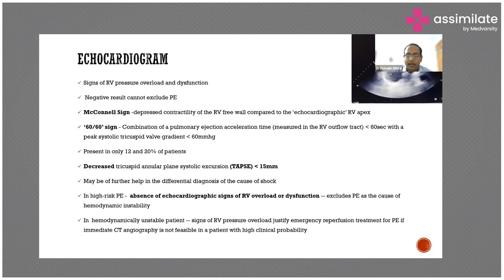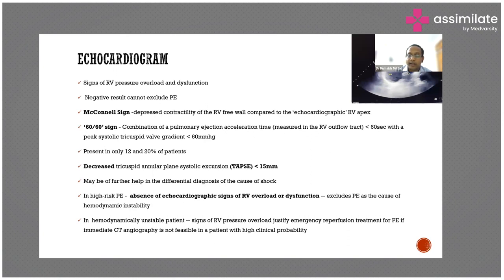Echo also gives us other causes — such as pericardial tamponade or myocardial infarction. Similarly, if the patient is having high-risk PE but there are no echocardiographic signs of RV dysfunction, hemodynamic instability has not been caused by pulmonary embolism — this is an important distinction to make.